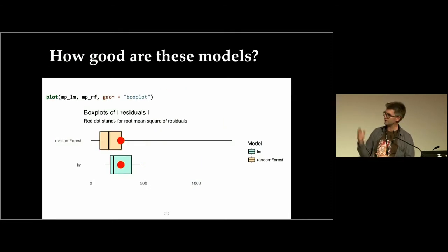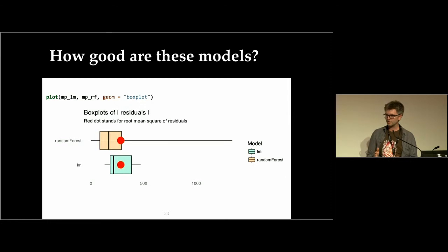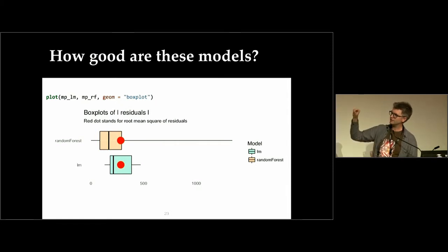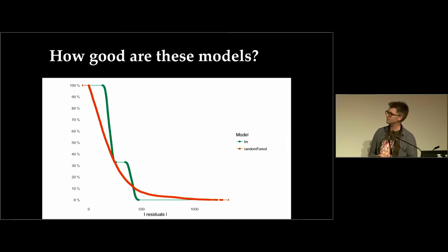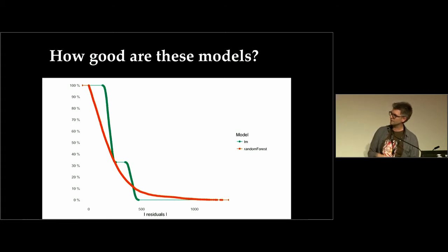There are also performance plots. You have a distribution of residuals. In most cases we just think about accuracy as a single number, but you can think about the whole distribution. For random forest, the average accuracy is almost identical to the linear model, but the residuals for random forest are in most cases smaller, while in some cases they are very, very large. From the empirical ECDF curve, you can see that random forest has smaller residuals in most cases, but in about 10% of cases the random forest predictions are very, very bad.